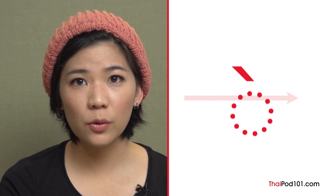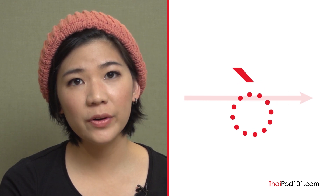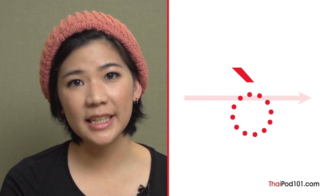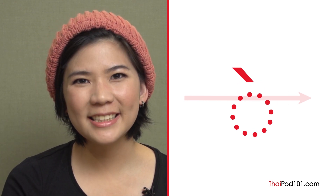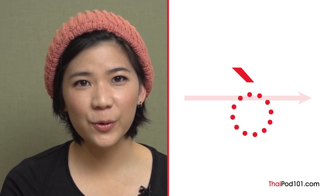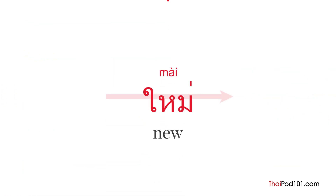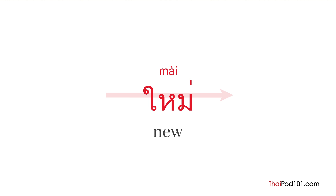In order to say this tone correctly, you need to lower the normal pitch of your voice. One similarity of this tone to the middle tone is the voice is constant. But for low tone, you add a slight falling low pitch. I'll give you an example so you can practice.